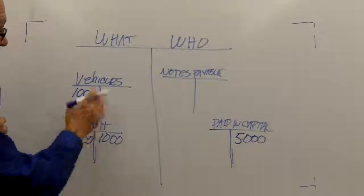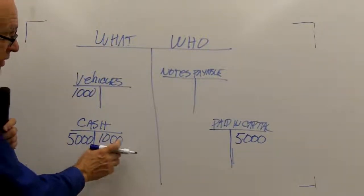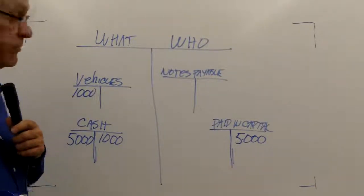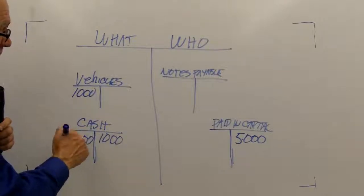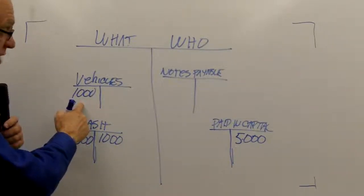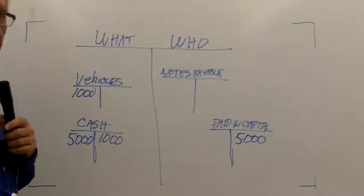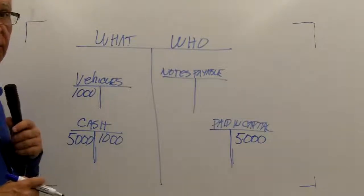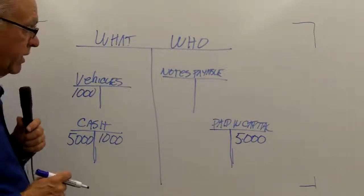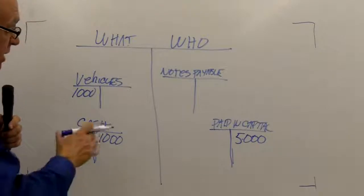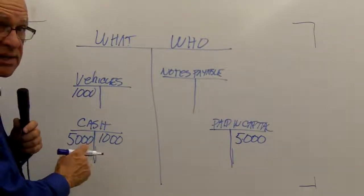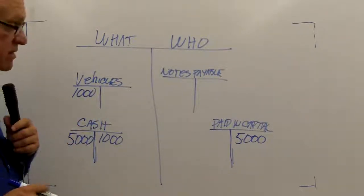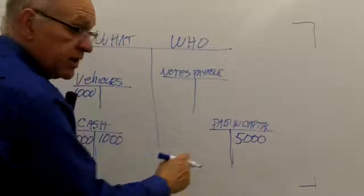When an account is on the asset side, if I credit it, it decreases that account. So in this case, I've bought a vehicle. I increase vehicles by $1,000. I decrease cash by $1,000. And it's interesting because the overall equation remains balanced. I have $5,000 in assets. In reality, that's $4,000 of cash and $1,000 of vehicles. And I have claim to all of that.